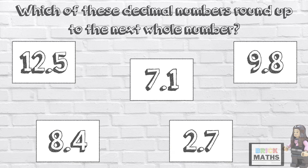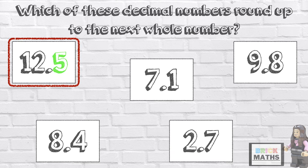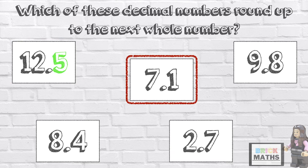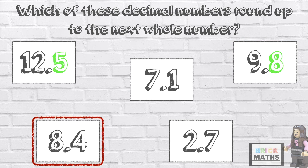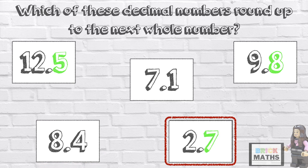How did you get on? 12.5 ends in 5, so it rounds up to 13. 7.1 ends in 1, so it rounds down to 7. 9.8 ends in 8, so it rounds up to 10. 8.4 ends in 4, so it rounds down to 8. And finally, 2.7 ends in 7, so it rounds up to 3.